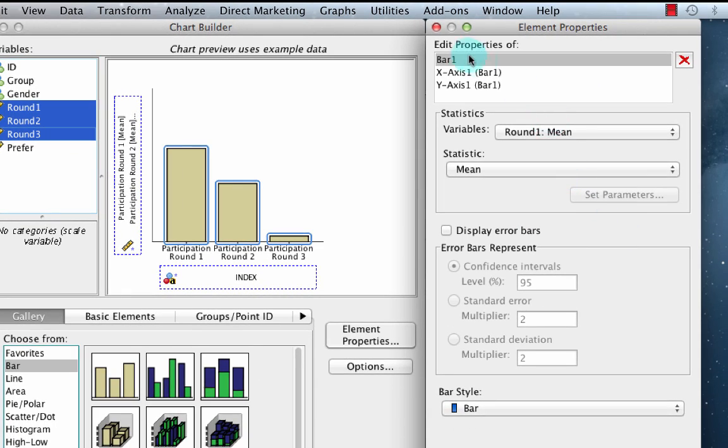In this area labeled Edit Properties of, bar one has already been selected. We can see that the statistic for bar one is round one mean. Make sure that the bar style is set to bar. So there's nothing to change here.